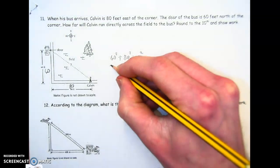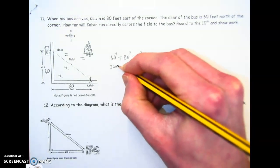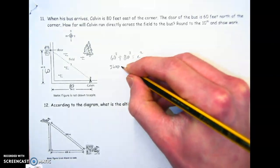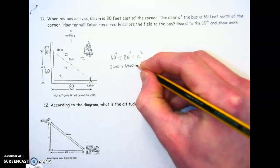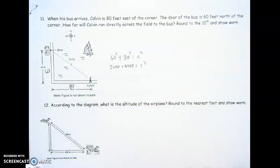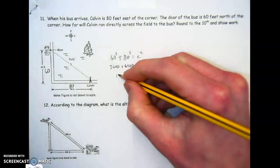So that's 3600 plus 6400 equals C squared. We'll add those together. That's 10,000.